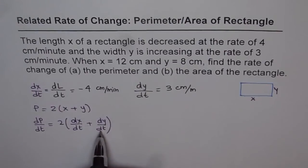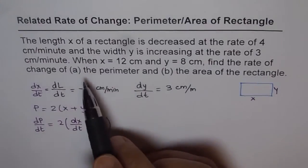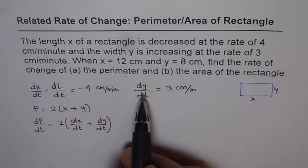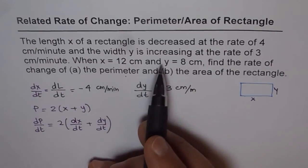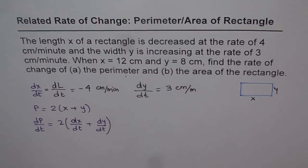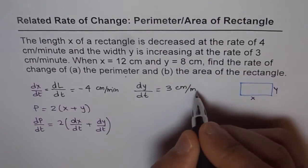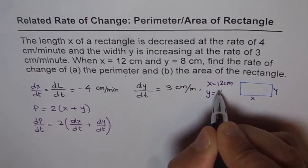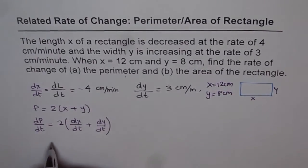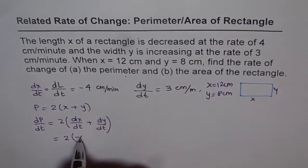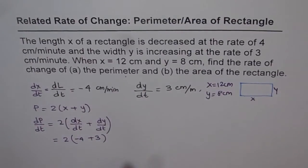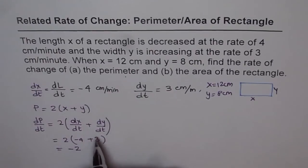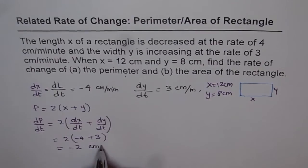We are given both dx/dt and dy/dt. We need to find the rate of change of perimeter and area. As you can see, the perimeter rate is actually independent of the x and y values. So we can plug in the values: dP/dt equals 2 times (dx/dt plus dy/dt) equals 2 times (minus 4 plus 3) equals 2 times minus 1, which gives minus 2 cm per minute.